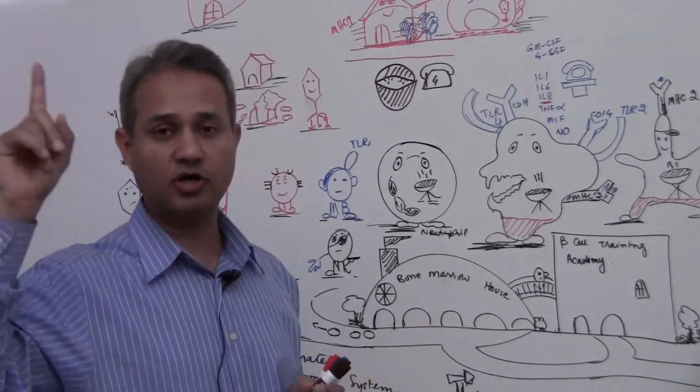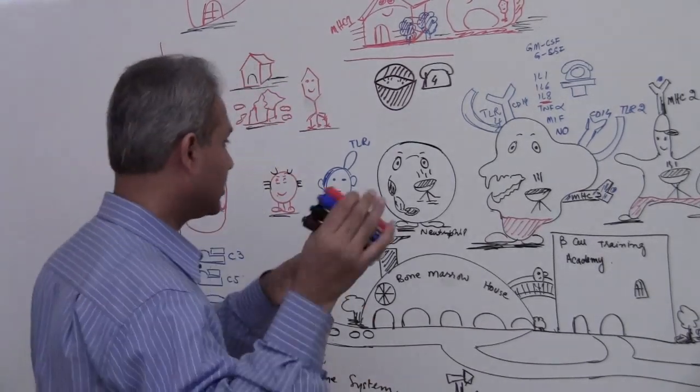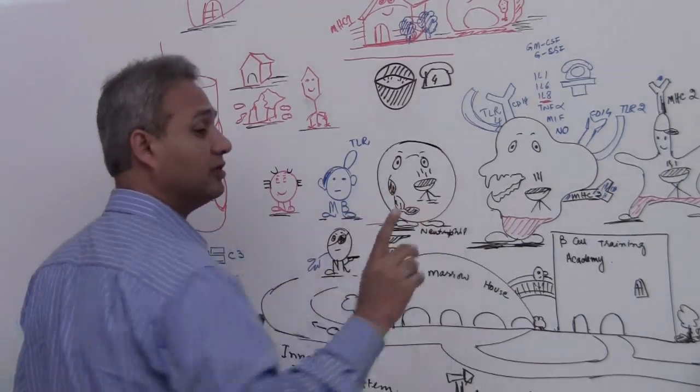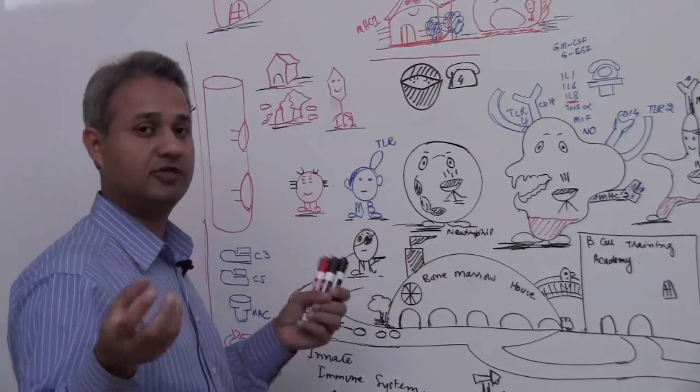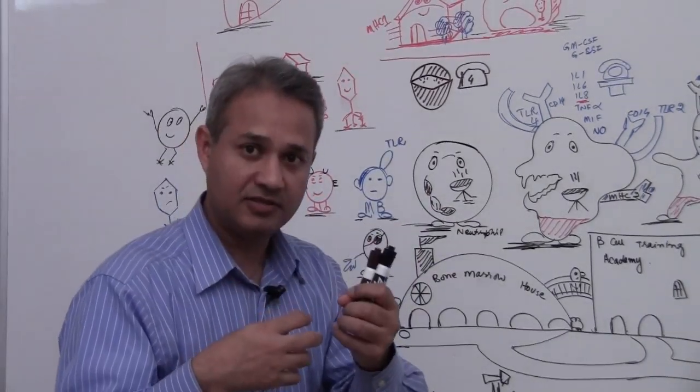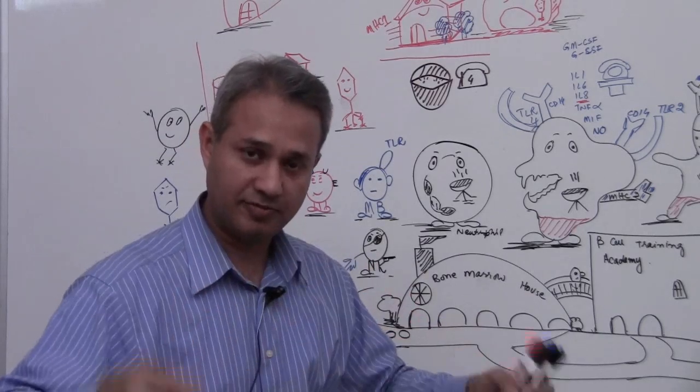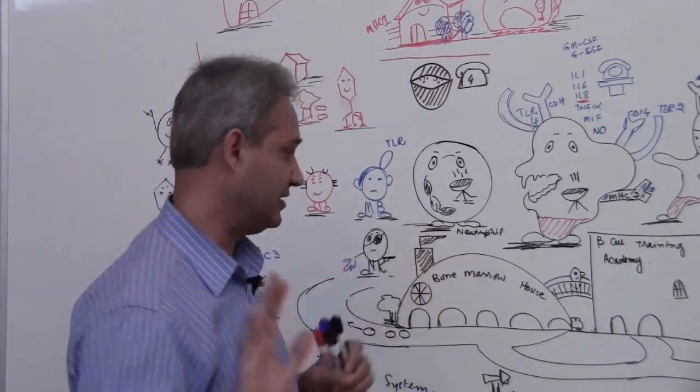Antigen presenting cells, we will talk about what are antigen presenting cells. Neutrophils are not that. Neutrophils just eat up the antigen, pathogen, break it up into smaller pieces, kill it and throw it. That's what they do.